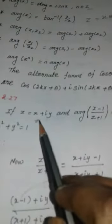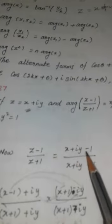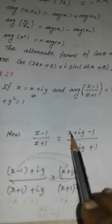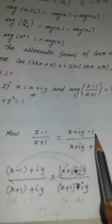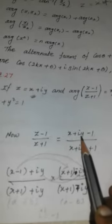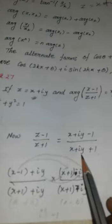Solution: I take the bracket value separately — (z − 1)/(z + 1). Since z = x + iy, I replace it: (x + iy − 1)/(x + iy + 1). Separating real and imaginary parts: numerator real part is (x − 1), imaginary part is iy; denominator real part is (x + 1), imaginary part is iy.